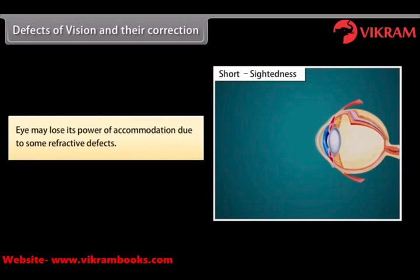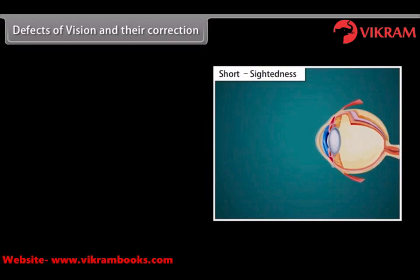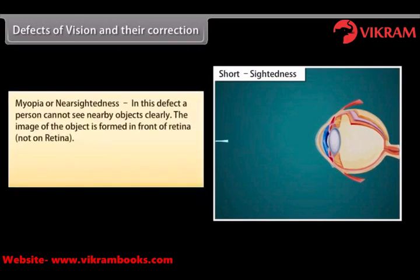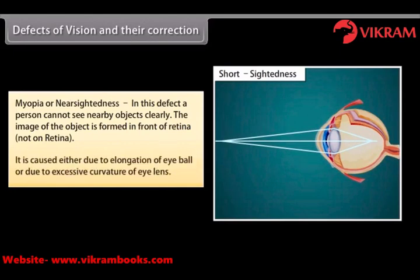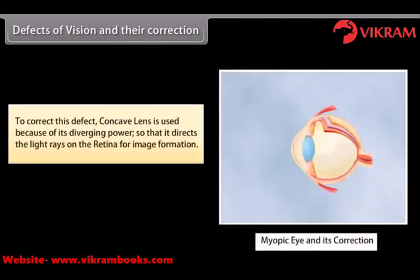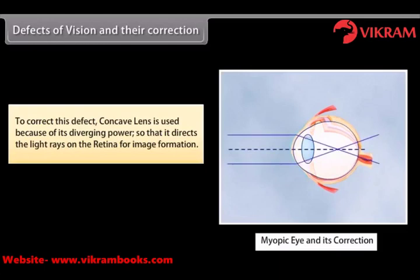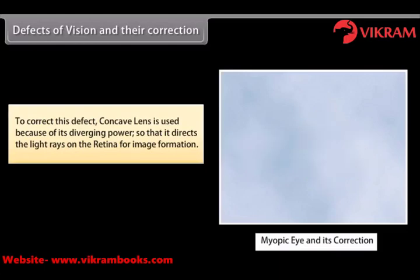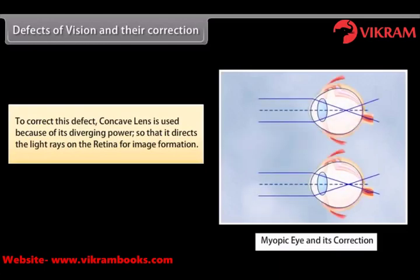Eye may lose its power of accommodation due to some refractive defects. There are three such defects. Myopia or near-sightedness — in this defect, a person cannot see distant objects clearly. The image of the object is formed in front of the retina. It is caused either due to elongation of the eyeball or due to excessive curvature of the eye lens. To correct this defect, a concave lens is used because of its diverging power, so that it directs the light rays on the retina for image formation.